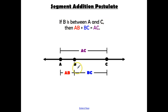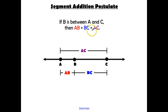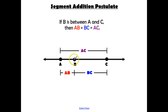The segment addition postulate says: if point B is between A and C, then the length of AB plus the length of BC is equal to the length of AC, the whole segment. Think about it plainly — we're adding segments. If you take segment AC and break it up at point B, this segment plus that segment equals the entire length.